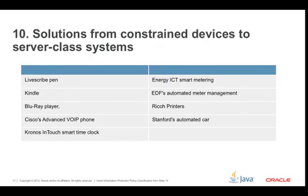Number ten: there's a whole range of solutions from constrained devices to server-class systems. Examples include the Livescribe pen, the Kindle device, Blu-ray players, Cisco's advanced VoIP phone, Kronos InTouch smart time clock, Energy ICT smart metering, EDF automated meter management, Ricoh printers, and the Stanford automated car — which ran up Pikes Peak by itself, with a variety of Java-based systems inside. It did much better than the helicopter filming it.